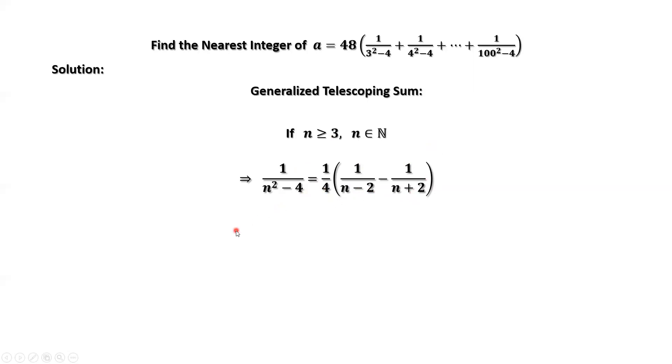Here is the given question. Look at the inside part of the right-hand side. 1 over 3 squared minus 4. Here we can use this result. When n equals 3, from the right-hand side is 1 over 4, 1 over 3 minus 2 minus 1 over 3 plus 2. We can apply this formula for the second term. Here, n equals 4. This second term can be written as 1 over 4 times 1 over 4 minus 2 minus 1 over 4 plus 2.